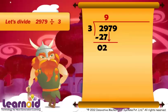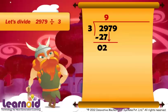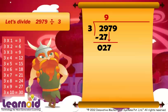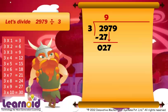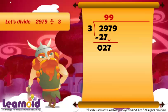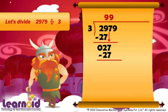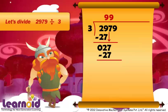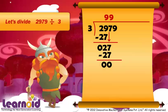Now 7 will come down. Again, read the table of 3. Now 3 into 9 is 27, which is equal to 27. Subtract 27 with 27. We got 0. Now 9 will come down.